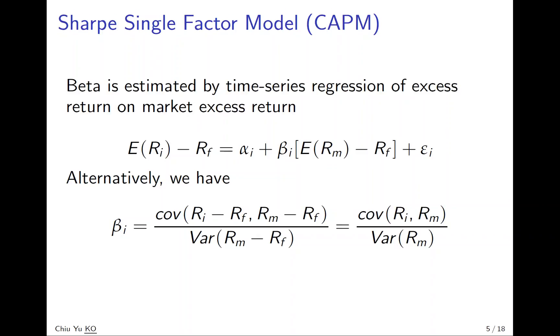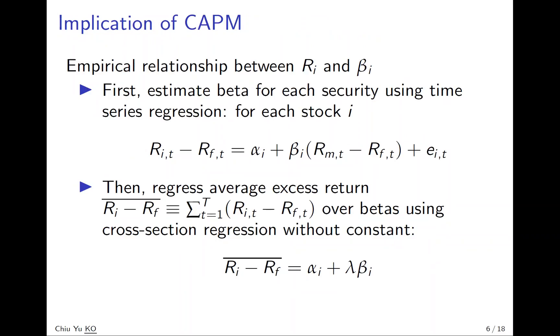But does it really satisfy what we observe in the real world? People have to look at empirically how the stock return changes with beta i. How do they do it? First, as we said, for each single stock they estimate beta by doing the time series regression. Look at the stock excess return, regress on the market excess return, which gives alpha and beta i.